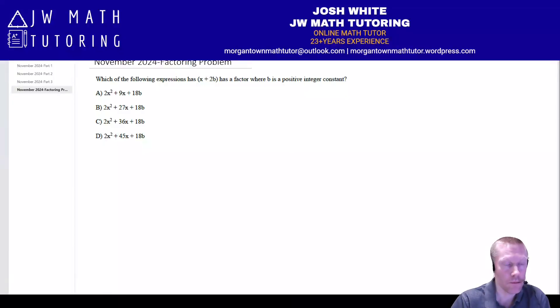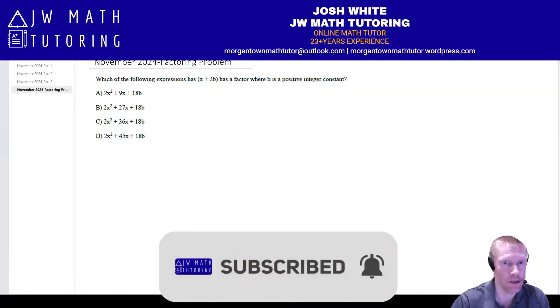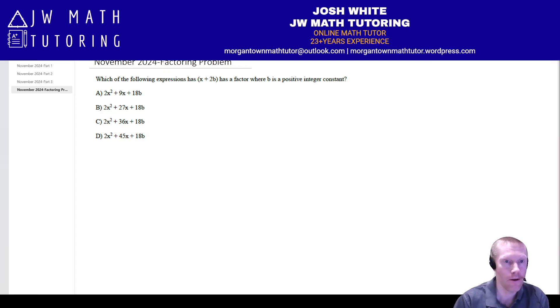This is a problem that appeared on the November 2024 Digital SAT Math Test for a lot of people. I had gathered it as part of the other November 2024 problem sets, but I didn't include it in one of those three because I've actually found four different ways that you could solve this problem. So I wanted to save this and basically just make it its own separate video. I'm going to go through all four methods. So you can see the problem on the screen there. Basically, it gives you four different expressions as multiple choice answers, and it says which of these has x plus 2b as a factor?